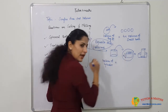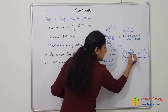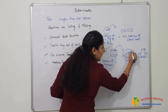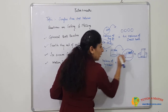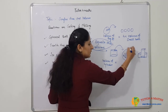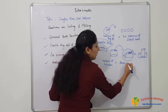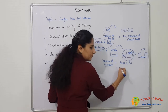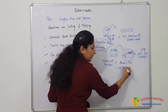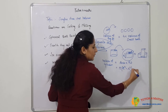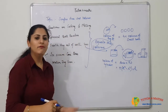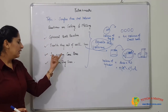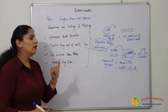The embankment is not a predefined shape, so we don't have a direct formula for it. Let the height of the embankment be h, the bigger radius be capital R, and the smaller radius be small r. The volume is area into height, where area is the ring: π(R² − r²) × h. From here we can find the height.